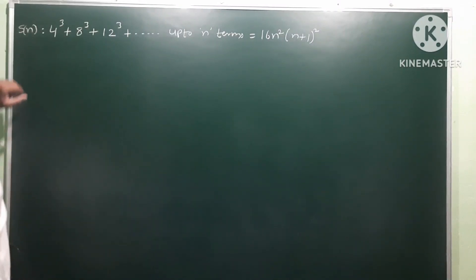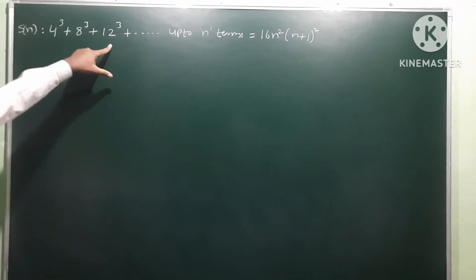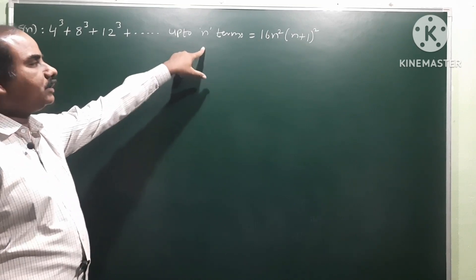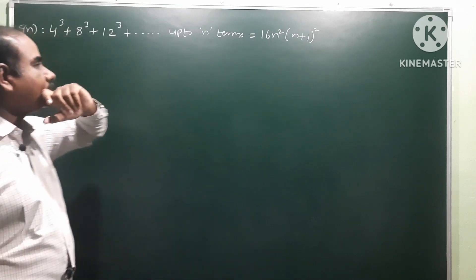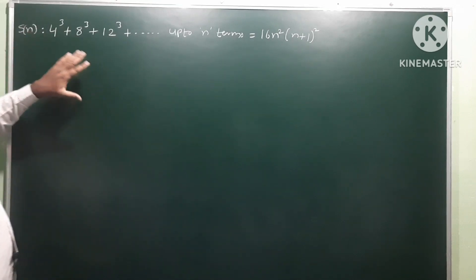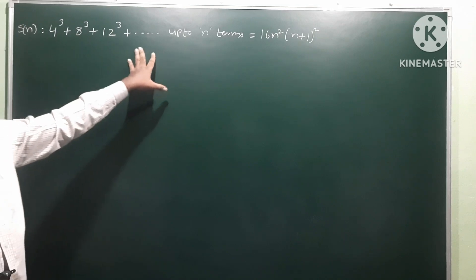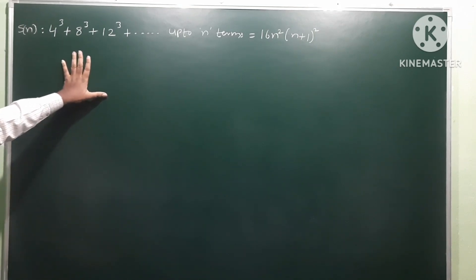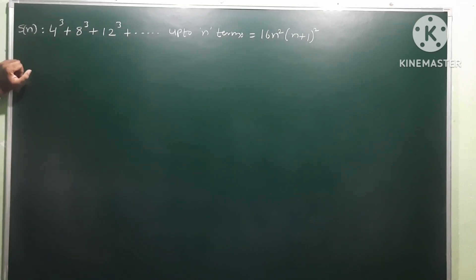Mathematical induction: the statement S(n) is equal to 4 cube plus 8 cube plus 12 cube and so on up to n terms, where the nth term equals 16n² into (n+1)². We have to show that this is true for all values of n by the principle of mathematical induction.